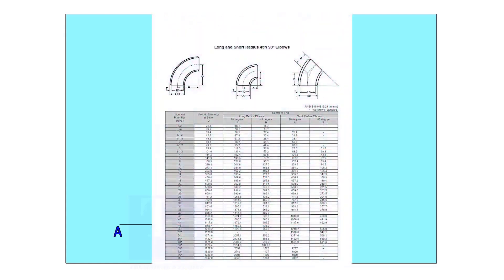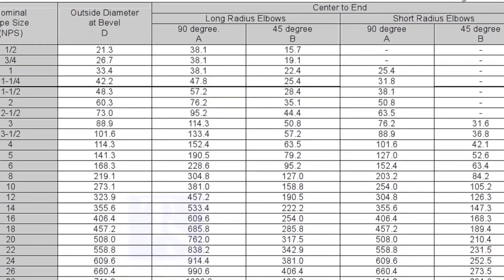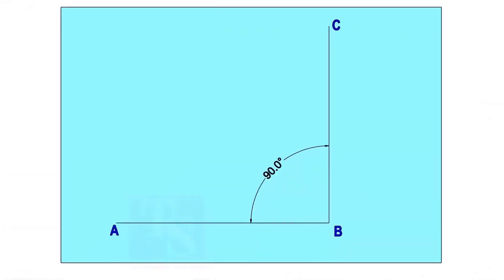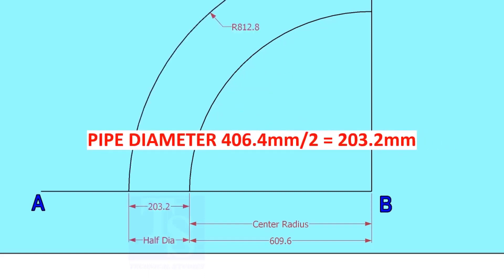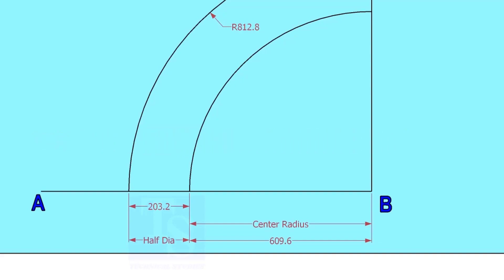Let us check the center radius of 16-inch long radius elbow. Draw an arc with the center radius 609.6 millimeters. Mark the half OD arcs on both sides of the center line.